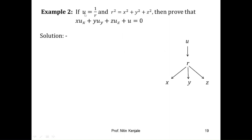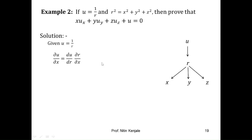Here u is a function of r, and r is a function of x, y, and z. So ∂u/∂x = du/dr · ∂r/∂x. Since u = 1/r, du/dr = −1/r².